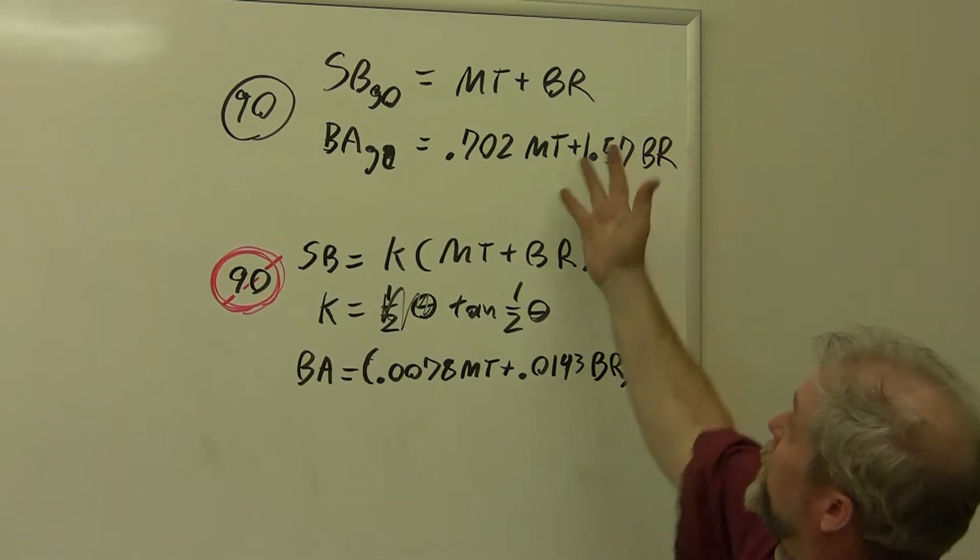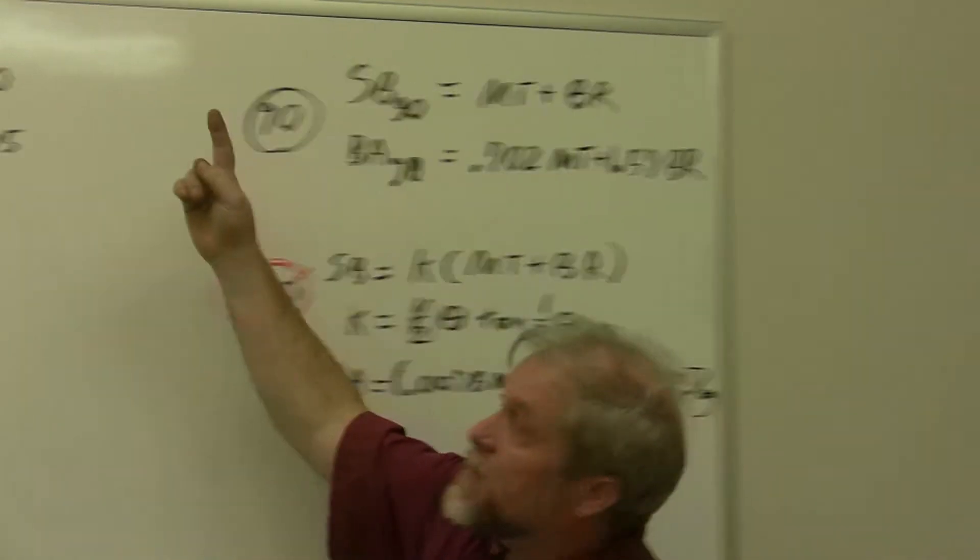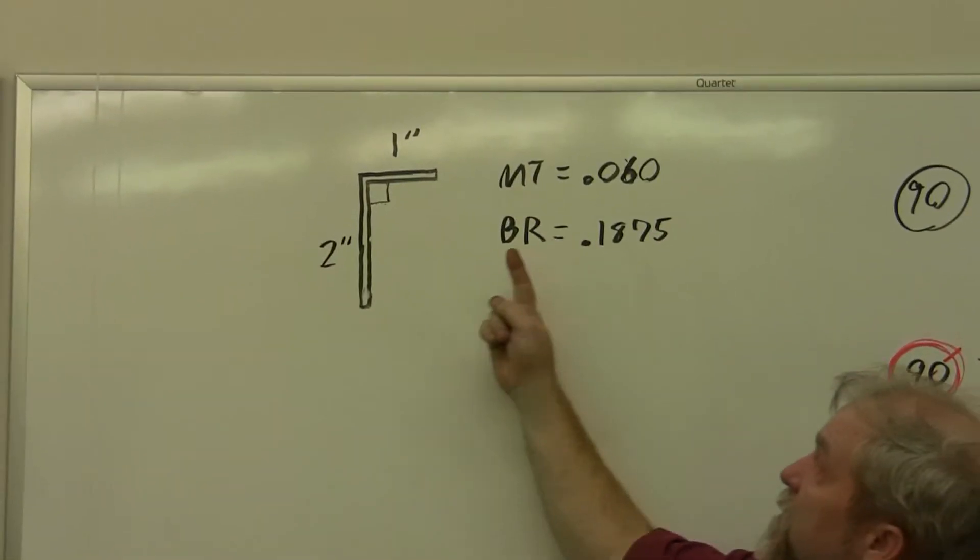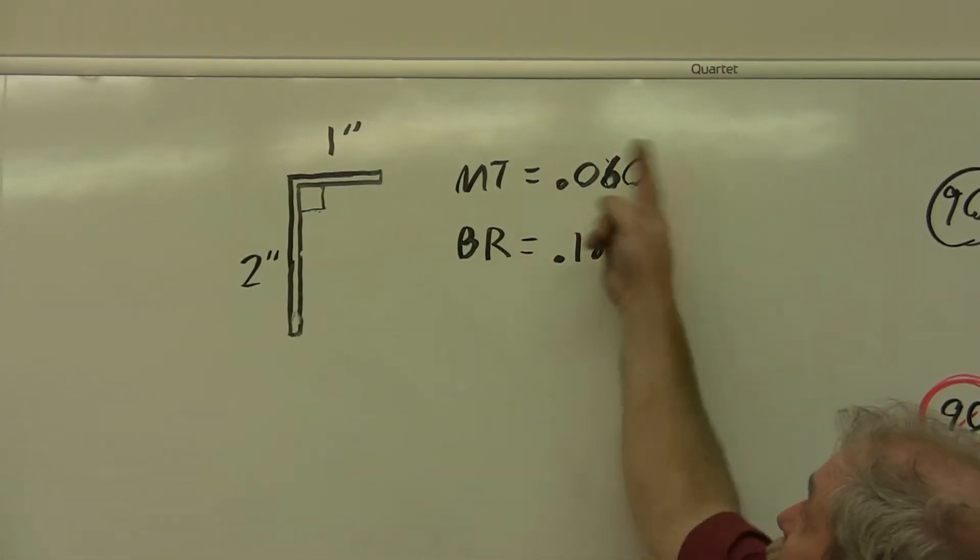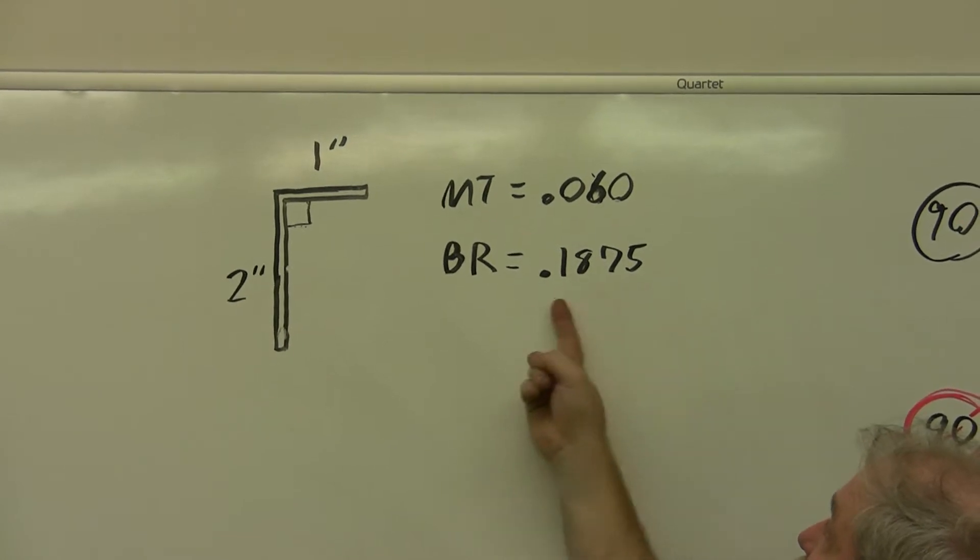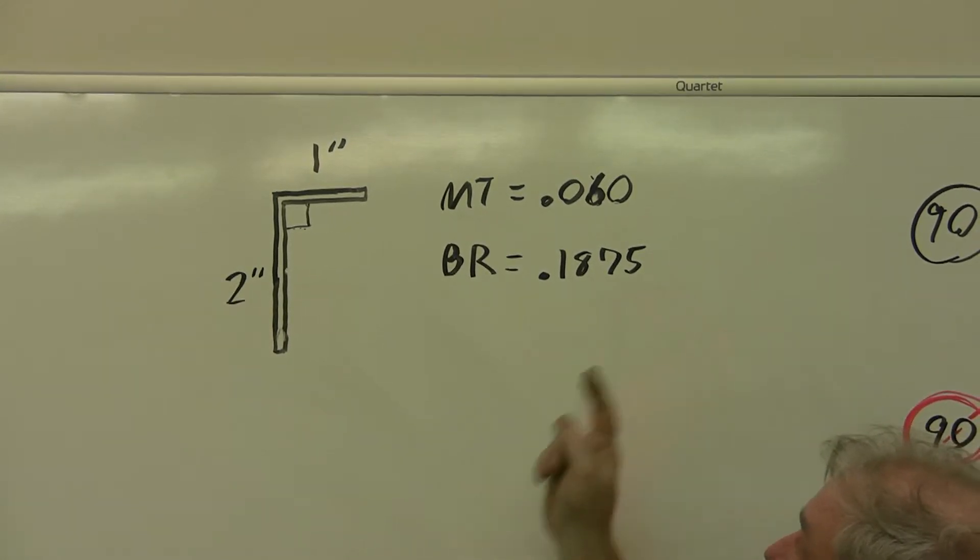All right, these are the formulas we're going to use. This is the problem we're going to do. In this case, we have a piece of material, it is 60 thousandths thick, and we have a bend radius of 3/16ths of an inch, 0.1875.